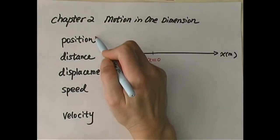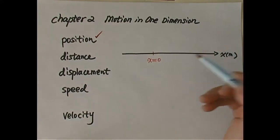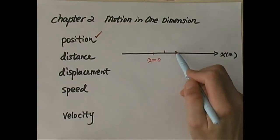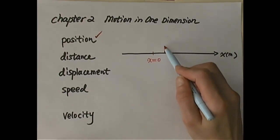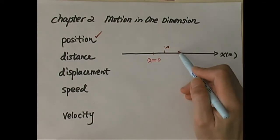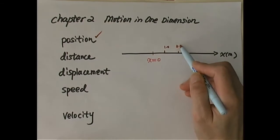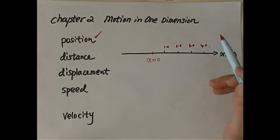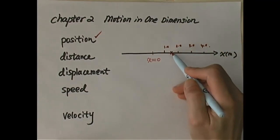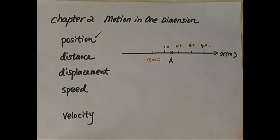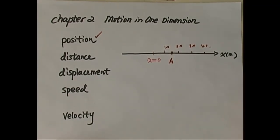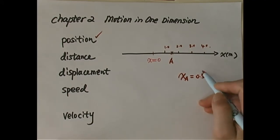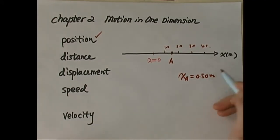The first thing we need to learn is about position. If this is the x-axis with a scale in meters (SI unit), and we mark intervals at 1.0, 2.0, 3.0, and so forth — when we mark position A halfway between 1.0 and 2.0, the position x of A is 0.50 meters. It's positive, obviously.